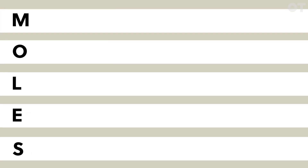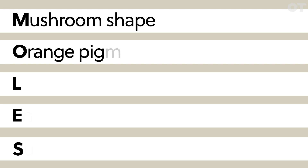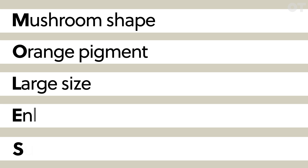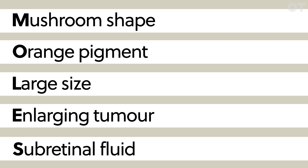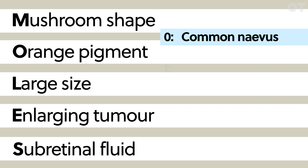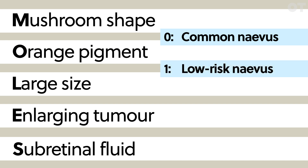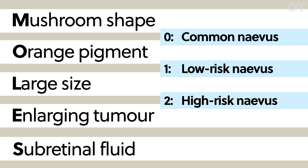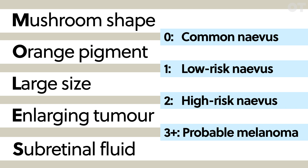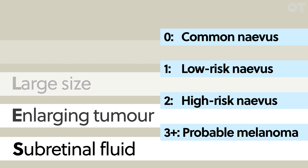You assess whether it's mushroom shaped, whether it has orange pigment associated with it, whether it's large, whether it's enlarging, and whether it has subretinal fluid associated with it. Depending on whether it has any of those factors, you give it a score. A total of zero means it's a common nevus, a total of one means it's a low-risk nevus, a total of two means a high-risk nevus, and a score of three or more suggests it's a probable melanoma.